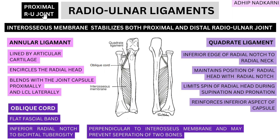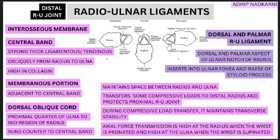Now let's move forward to your distal radio-ulnar joint. Under the distal radio-ulnar joint, we have our dorsal and palmar radio-ulnar ligaments, and then we are going to talk about the interosseous membrane, which is divided into the central band, membranous portion, and dorsal oblique cord — different from the oblique cord we saw previously.